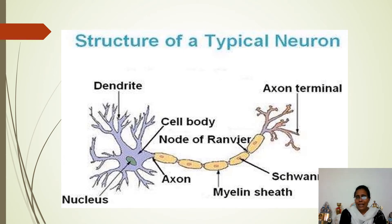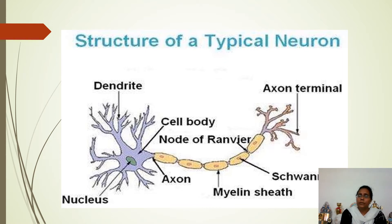Here is the typical structure of a neuron. You can see the cell body with the central nucleus, surrounded by cytoplasm. The cytoplasm has several branches called dendrites, which are the site at which receptors are present. The cell body gives rise to a long fiber called the axon, covered by a protective sheet called the myelin sheath. The axon terminates into endings called nerve endings or axon terminals. Information is carried from one neuron to the other, and the gap between two neurons is called the synapse.